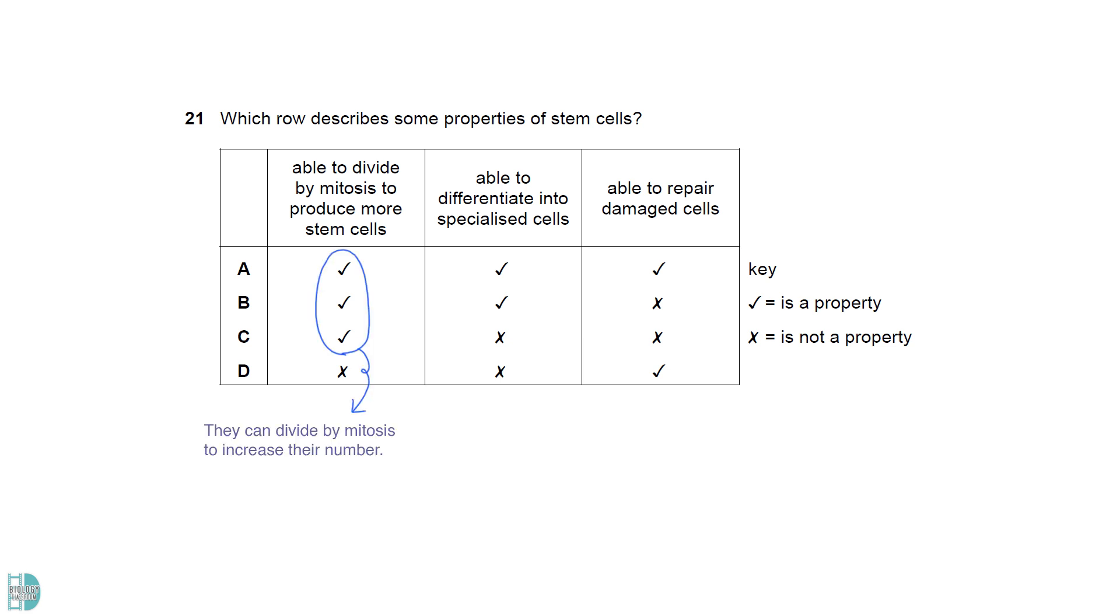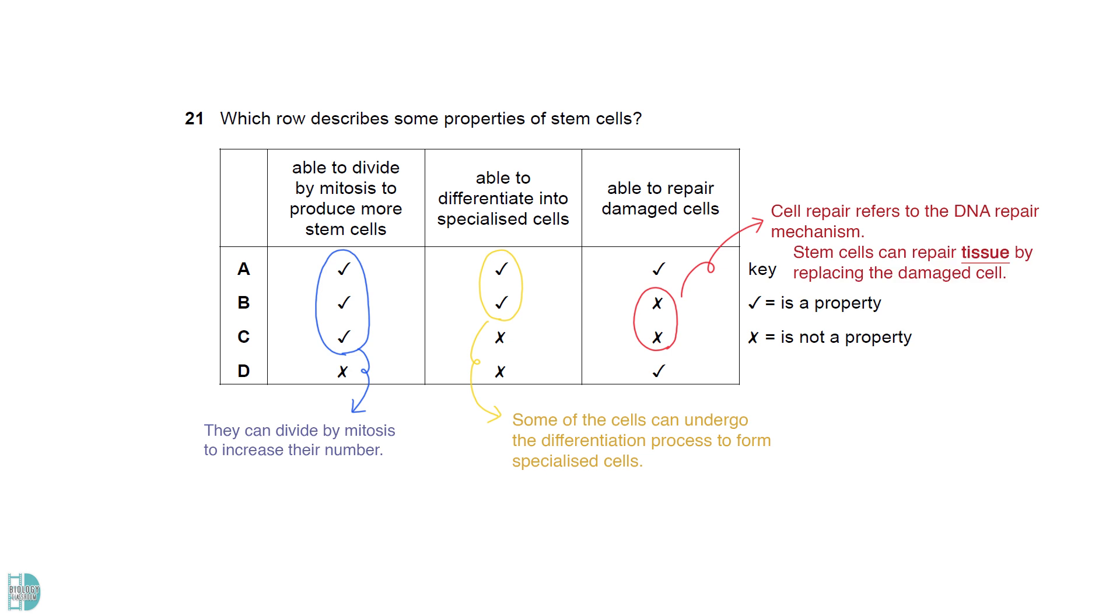A stem cell can divide by mitosis to increase its number. Some of the cells can undergo the differentiation process to form specialized cells. It cannot repair damaged cells as cell repair refers to the DNA repair mechanism. Stem cells can repair tissue by replacing the damaged cells. It can't repair individual cells.